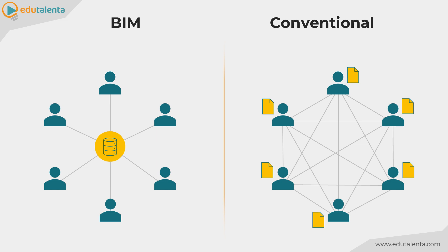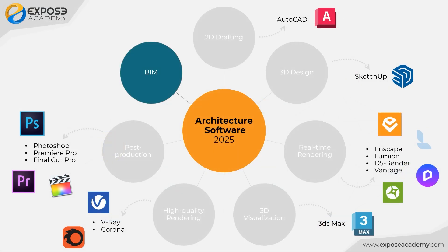With BIM, a building's project data is centralized in just one place. Each party involved can open the file simultaneously without interrupting the other's work. This allows for more effective and efficient collaboration. There are many BIM software in the market, but the most popular ones are Revit and Archicad.